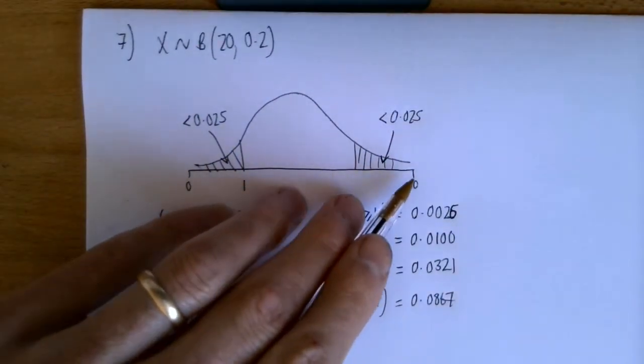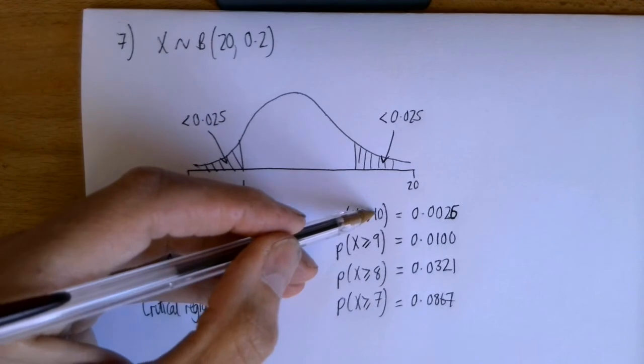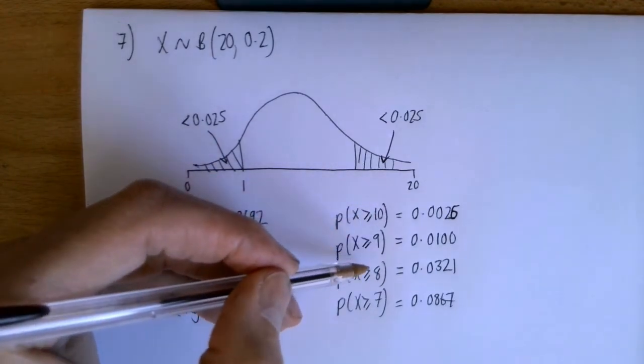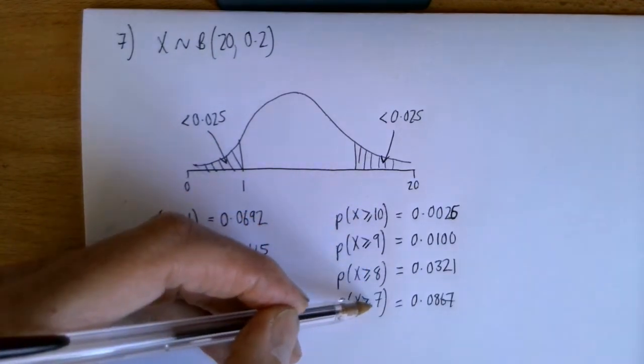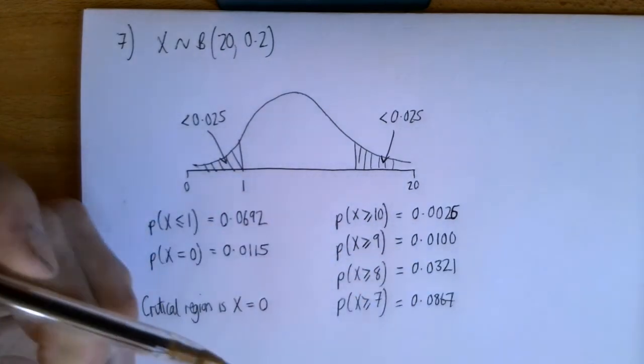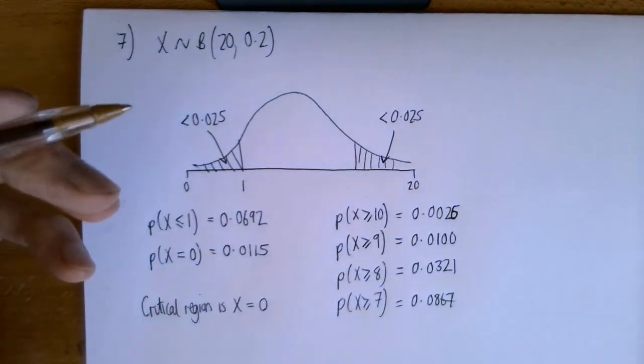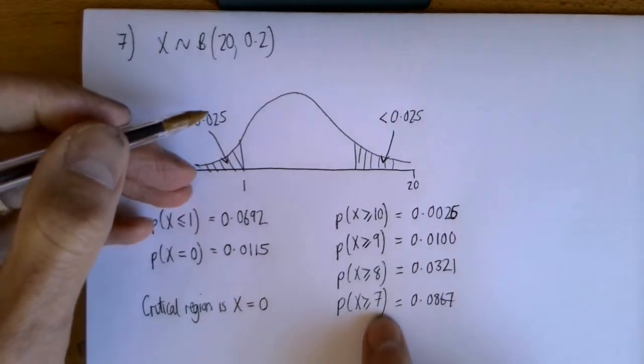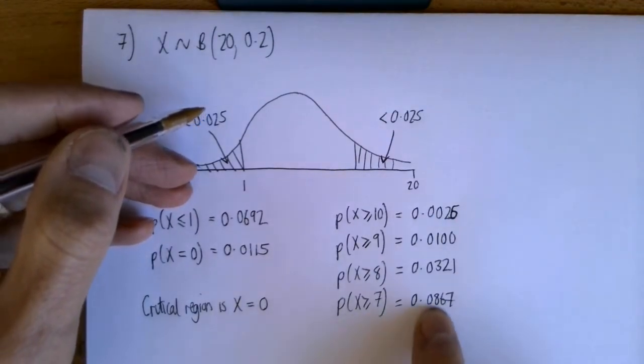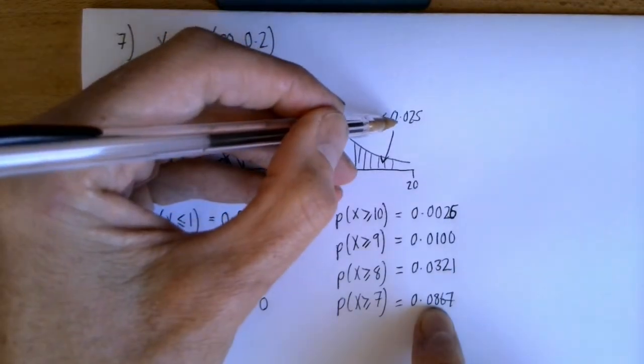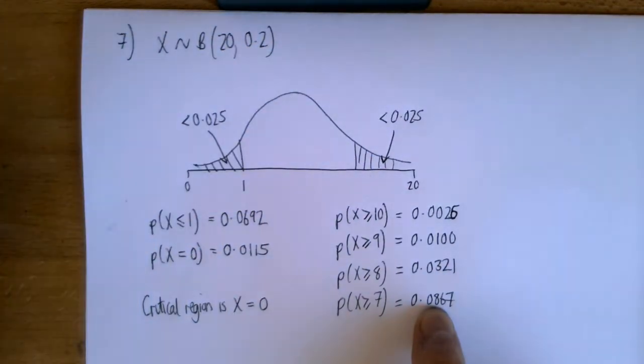if I try different values up to 20—so 10 to 20, 9 to 20, 8 to 20, and 7 to 20—these are the probabilities I get. Now, if it was a normal question, we would say that 7 to 20 is the critical region because that's the first value that goes below 0.025. But because this question is worded slightly differently...